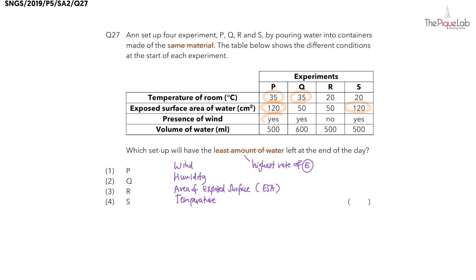Now what about the last condition, the volume of water? Since we are looking for the least amount of water left after the experiment, we need the setup that also started off the experiment with the least amount of water. We have these three setups: P, R, and S.